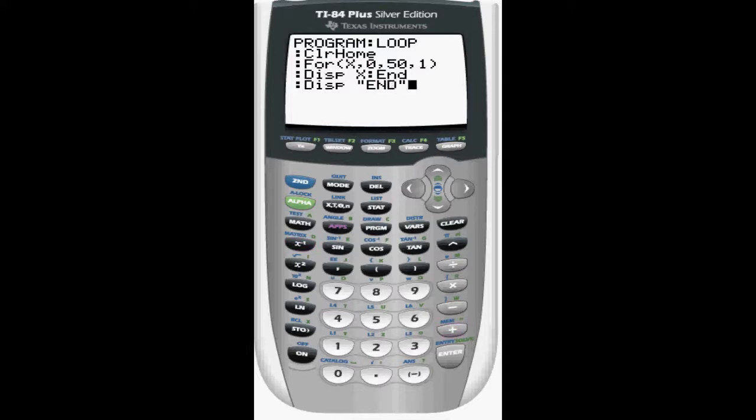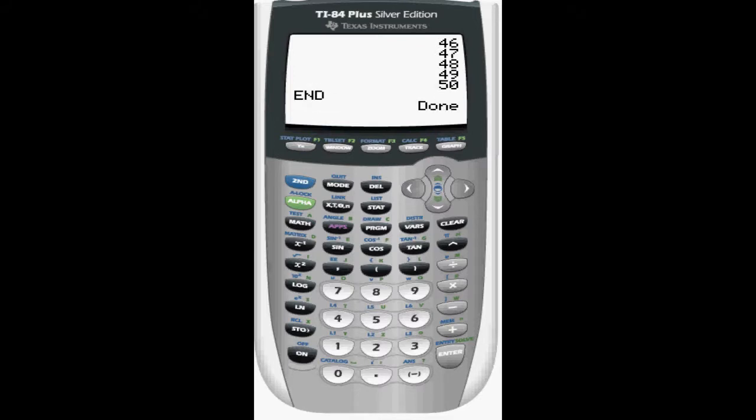So now, assuming I coded that right, we can run that loop. It will count up to 50, and then display end.